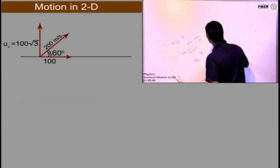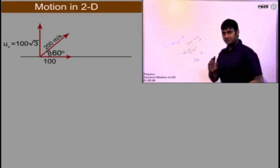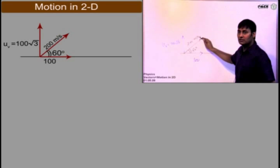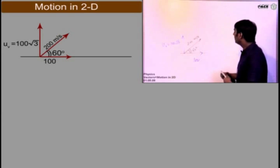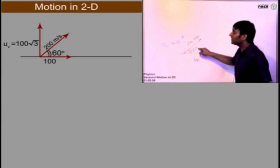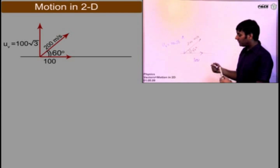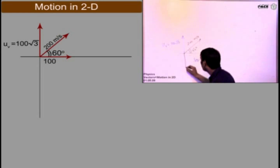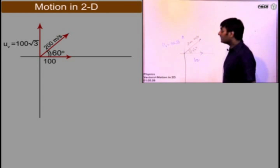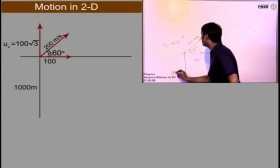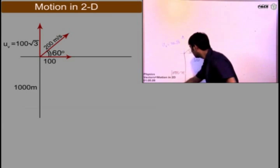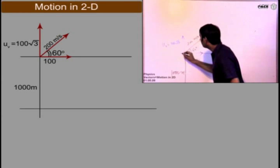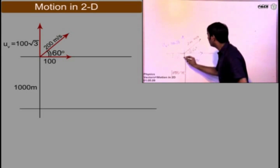If I tell you a question now, let's do another question. The same body 200 meter per second, but this body is not being thrown from the ground. I am throwing this body from a building and the building is 1000 meter high. This is the building from where I am throwing it.